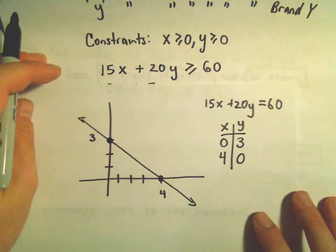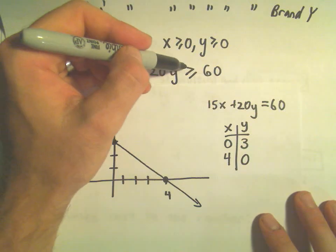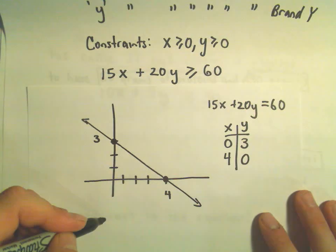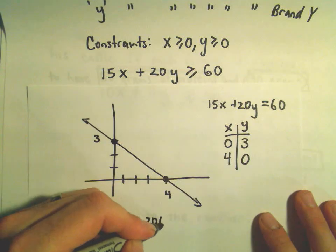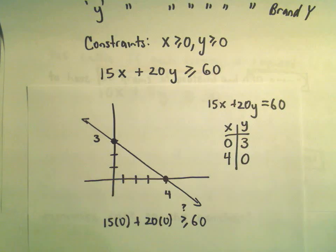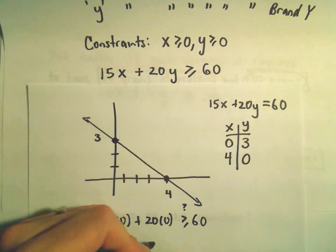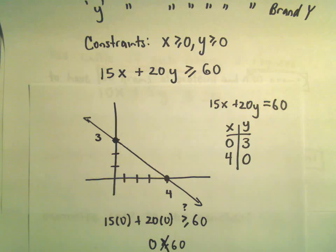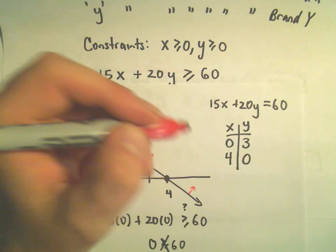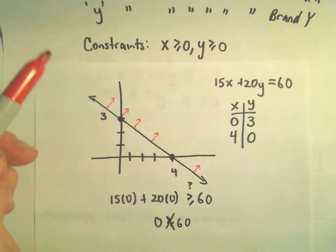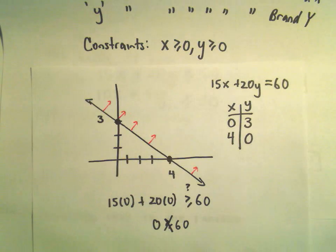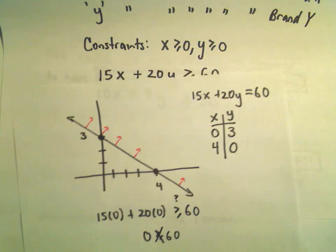We're trying to satisfy 15X plus 20Y greater than or equal to 60. Using the test point (0,0): 15 times 0 plus 20 times 0 equals 0, which is not greater than or equal to 60. So we shade above that line. Since X and Y are both greater than or equal to 0, we're restricted to the upper right quadrant.